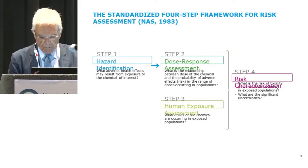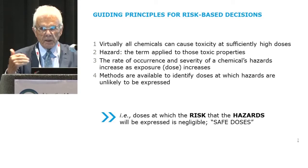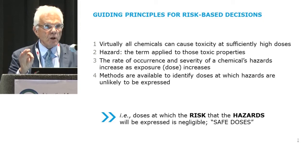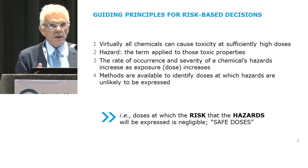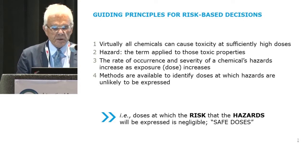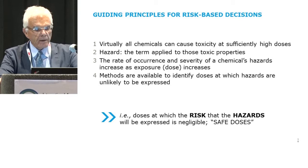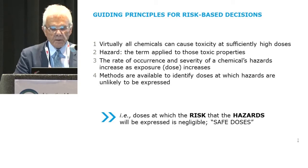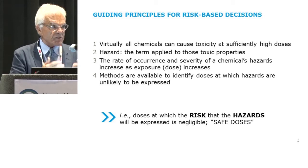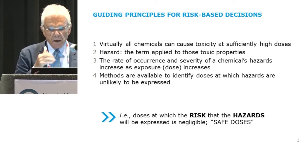The framework is based on the fact that all chemical agents, with almost no exceptions, will cause some kind of harmful effect at sufficient doses. The world does not divide into toxic chemicals and non-toxic chemicals — that's a simplification — but it does divide into risky chemicals and those that are not. We call the toxic properties of a chemical a hazard, and we want to identify doses at which the hazards are unlikely to be expressed — what we call safe doses — thinking that derives a risk-based decision designed to protect public health.